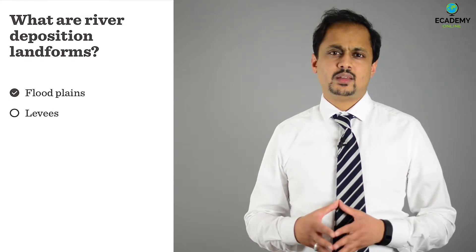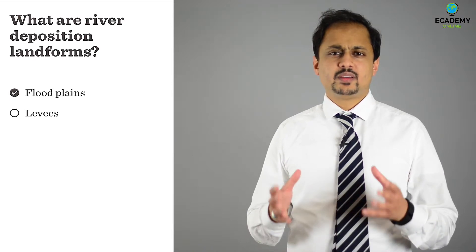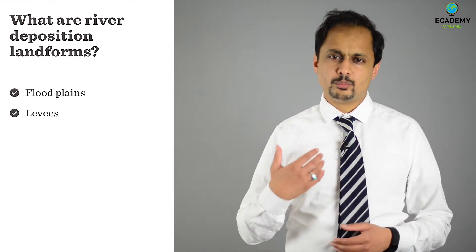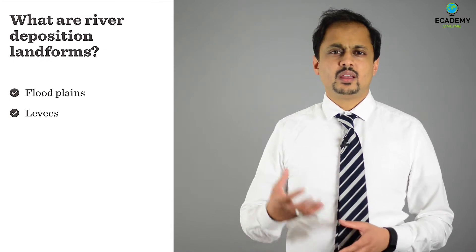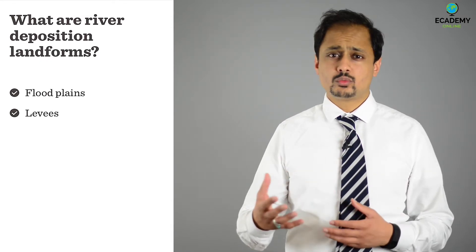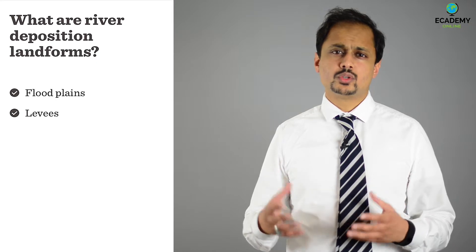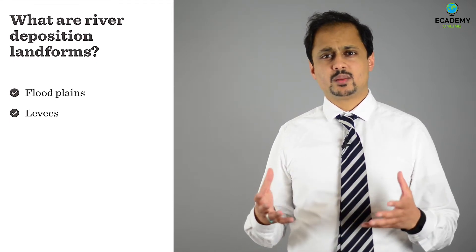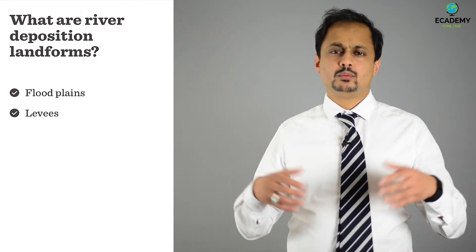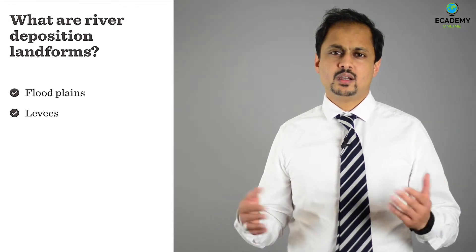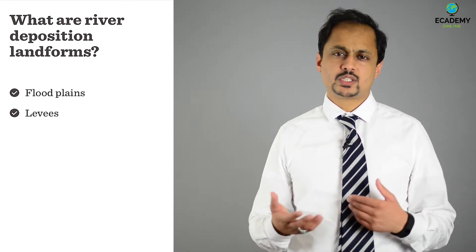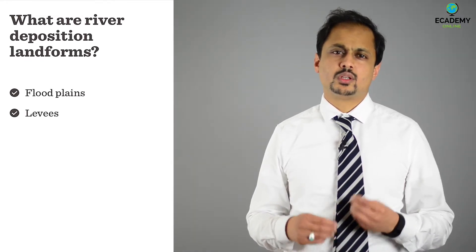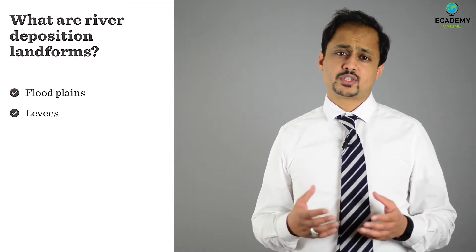Number two, levees. Levees are natural embankments of sediment along the banks of a river. They are formed along rivers that carry a large load and occasionally flood. In times of flood, water and sediment come out of the channel and the river overflows its banks. The water immediately loses velocity and energy as it leaves the channel, and so the larger sediment is deposited first on the banks.